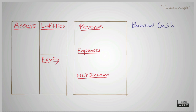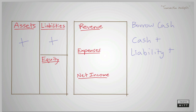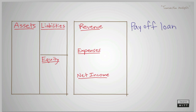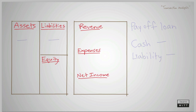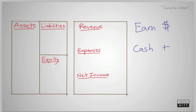When a business borrows cash from a lender, an asset account will increase and a liability account will increase. When a business pays off a lender, an asset account will decrease and a liability account will decrease.